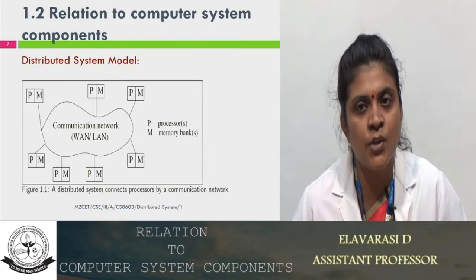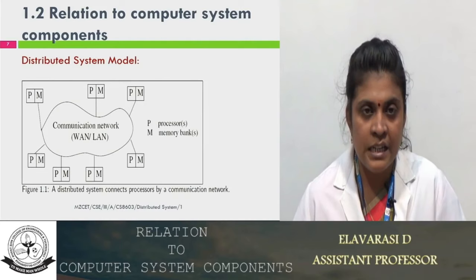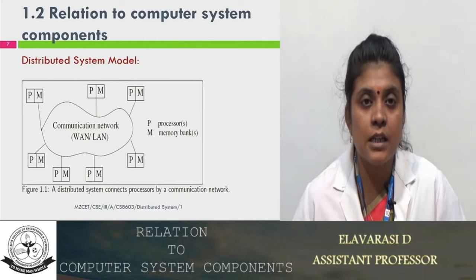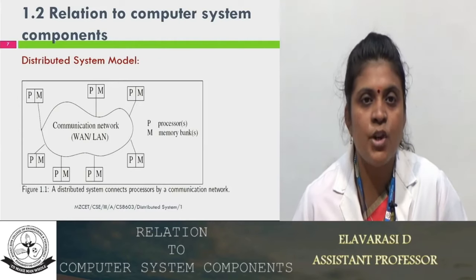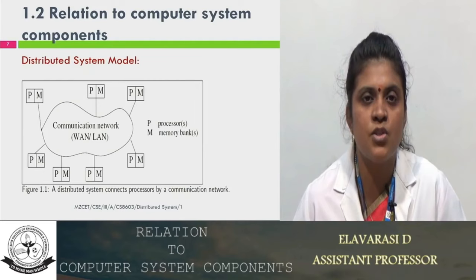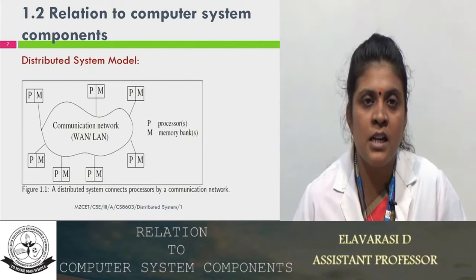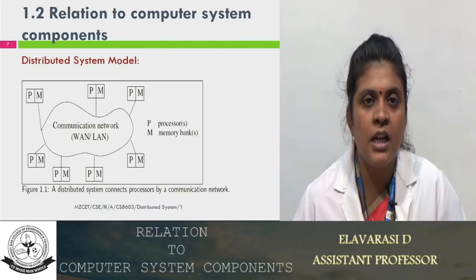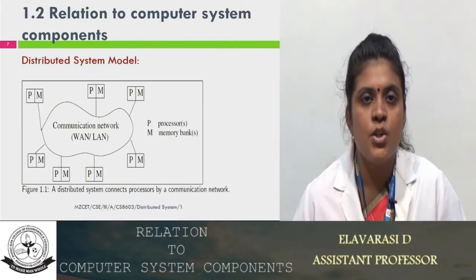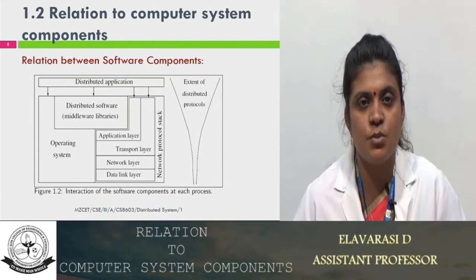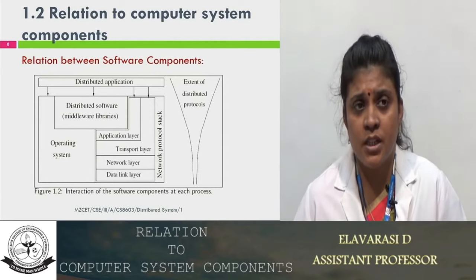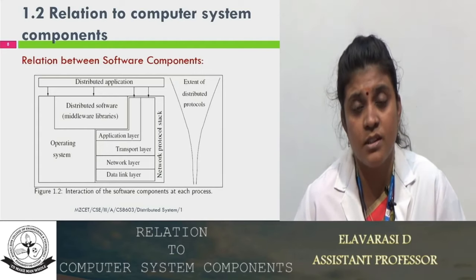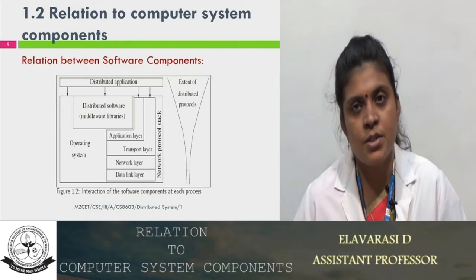In the distributed model, the execution time is negligible when compared to the transmission time, because it is connected over a communication network with no shared memory. When a shared memory concept is used, the transmission time is very less since operations can be read and written through shared memory. But in this case the data has to be transmitted from one process to another through the network, including network transmission time, so execution time is much less than transmission time. The middleware layer provides abstraction, showing the user that the application is running on a single system and is not distributed.